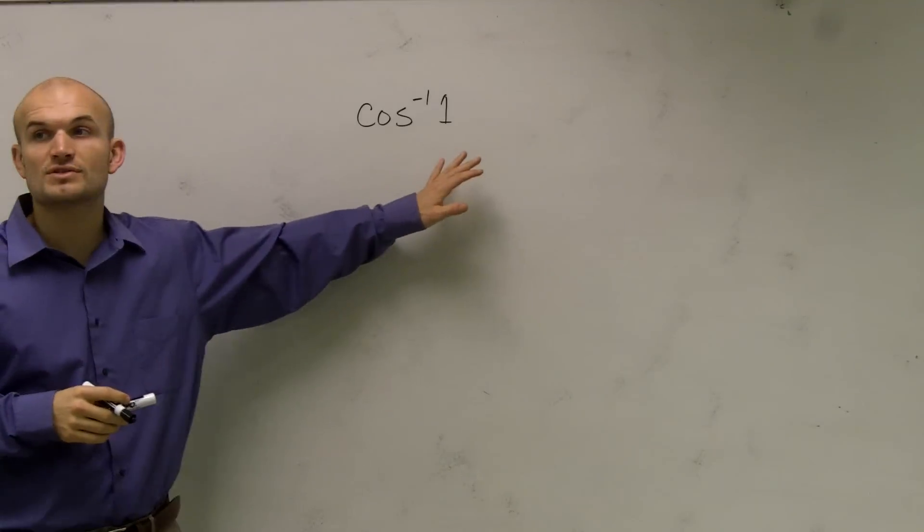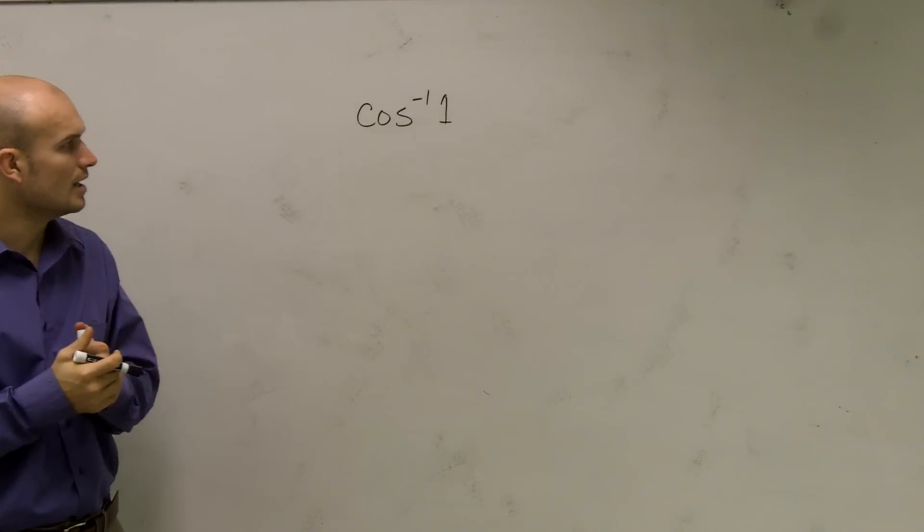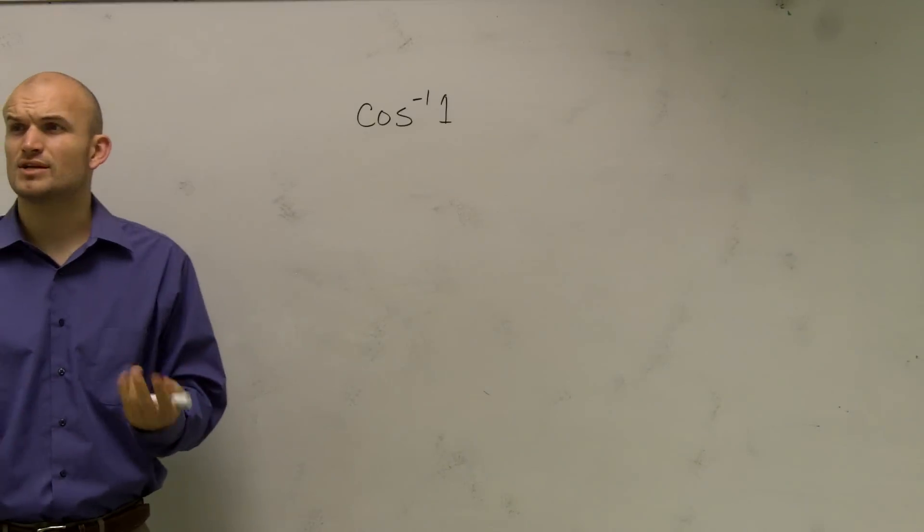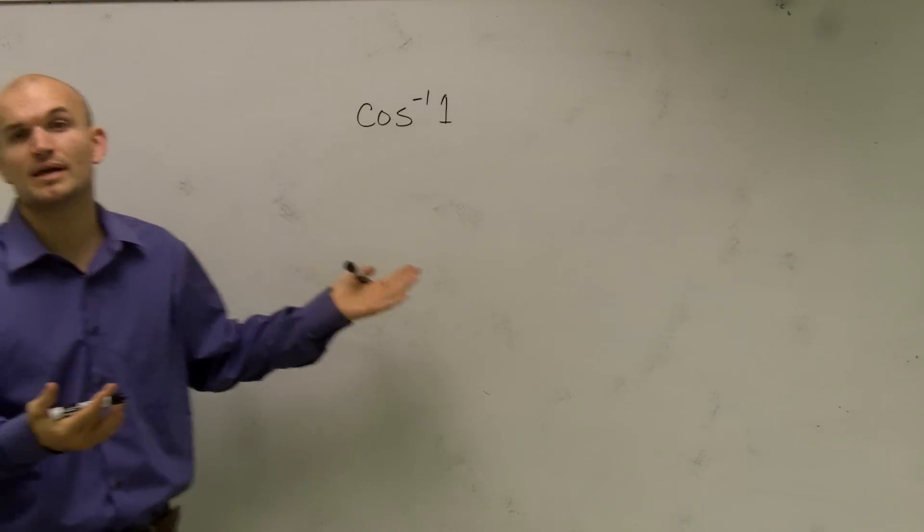So if we want to find the inverse cosine of 1, what we need to do is we need to remember a couple of things. First of all, we need to figure out where is our coordinate. If we're going to be looking at inverse cosine of 1, where could that be in our unit circle?